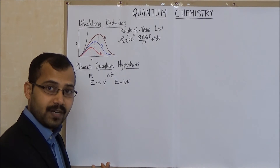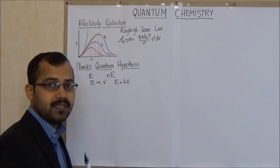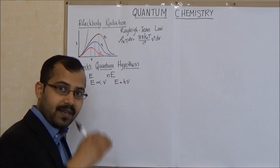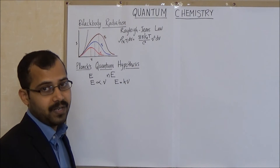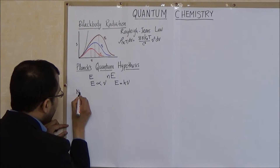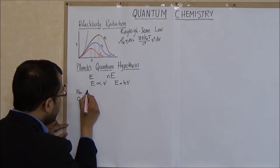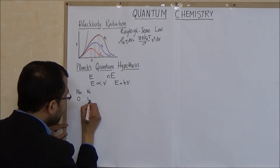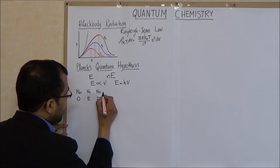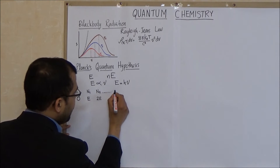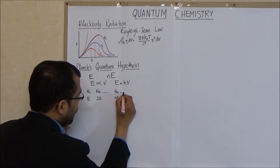When the black body is heated, the electronic oscillators will make transitions from the lower energy state, and when there is a transition from the higher energy state to the lower energy state, radiation will be emitted, and this radiation is black body radiation. Let N₀ be the number of oscillators with energy 0, N₁ the number with energy E, N₂ the number with energy 2E, and Nₙ the number with energy NE, and so on.